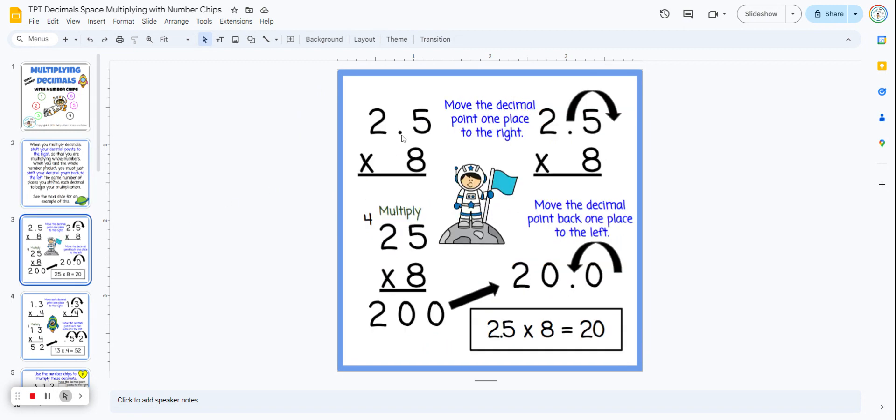Here we're going to move the decimal point one place to the right, and then you multiply as if there were no decimal points. And then when you get your answer, you're going to move that decimal point back one place to the left.